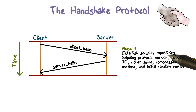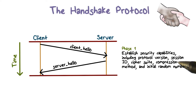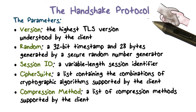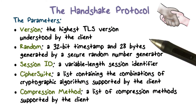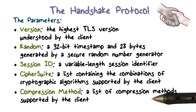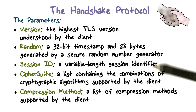Phase one of the protocol establishes the security capabilities. It is initiated by the client sending a client hello message to the server. The client hello message contains a number of parameters, including version number, session ID, crypto suite, compression method, and the initial random numbers.